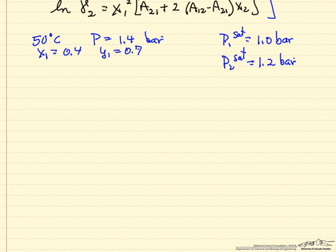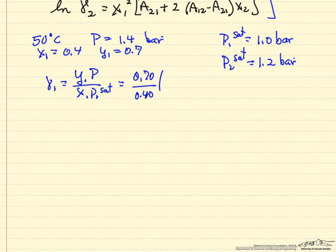I have just listed again the conditions for our problem. What we're going to do is calculate gamma 1, which is y1 P over x1 P1 sat, just the modified Raoult's law. y1 is 0.7, x1 is 0.4, total pressure 1.4 bar, the saturation pressure of component 1 is 1 bar.